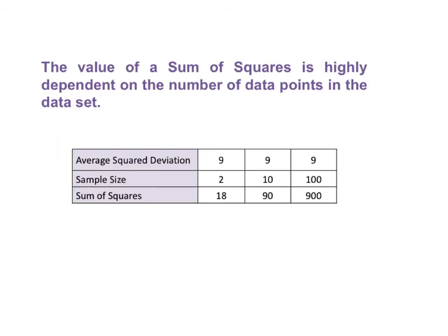The value of a sum of squares is highly dependent on the number of data points in the data set. Let's compare three samples of sizes 2, 10, and 100. And let's say they all have the same average squared deviation, 9. Reading the columns vertically, for the sample size of 2, the sum of squared deviations would be 18. For the sample size of 10, it would be 90. And for the sample of size 100, it would be 900. We can clearly see that while the sum of squares does contain information about the variability of the data in the samples, it is not a very useful measure of variability. That is why sums of squares are usually used as interim steps in calculations rather than as measures of variation themselves.